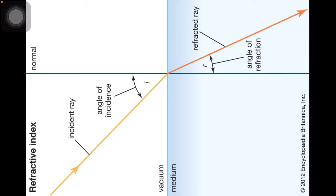The first law of refraction states that the incident ray, the refracted ray, and the normal all lie in the same plane.